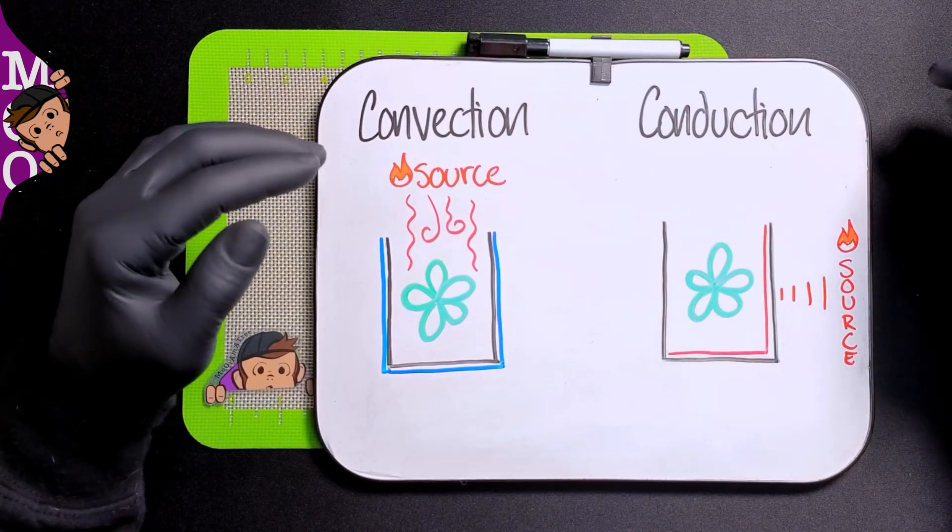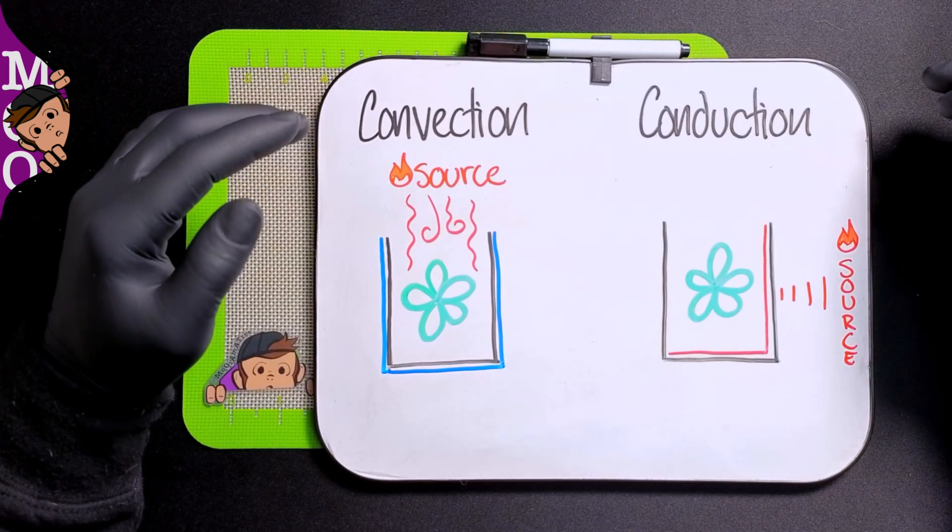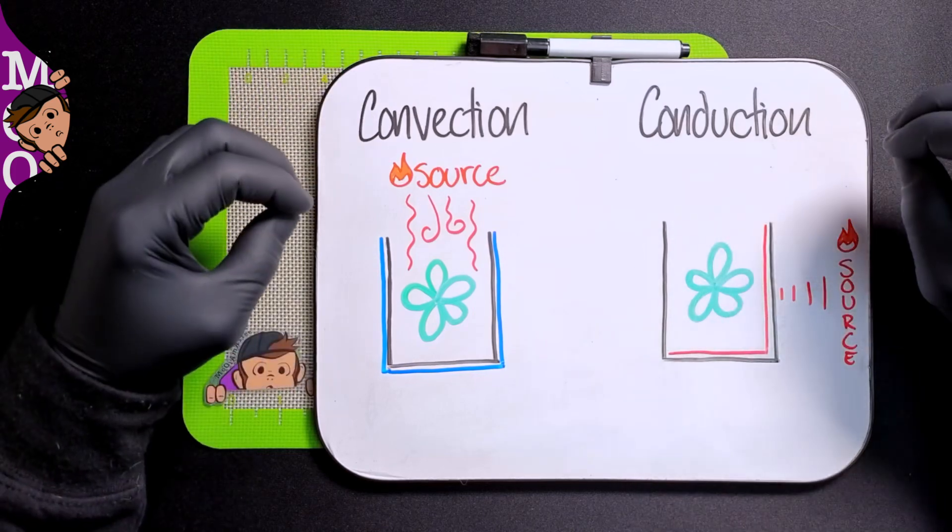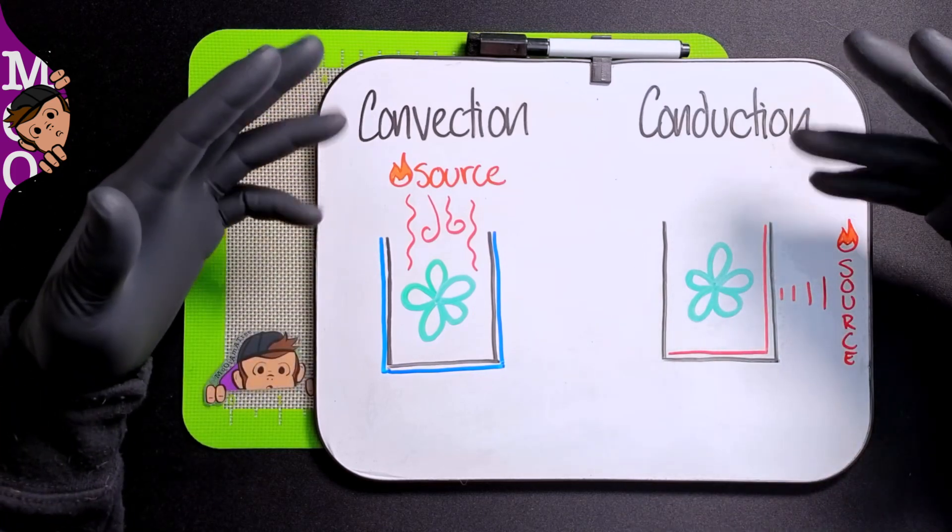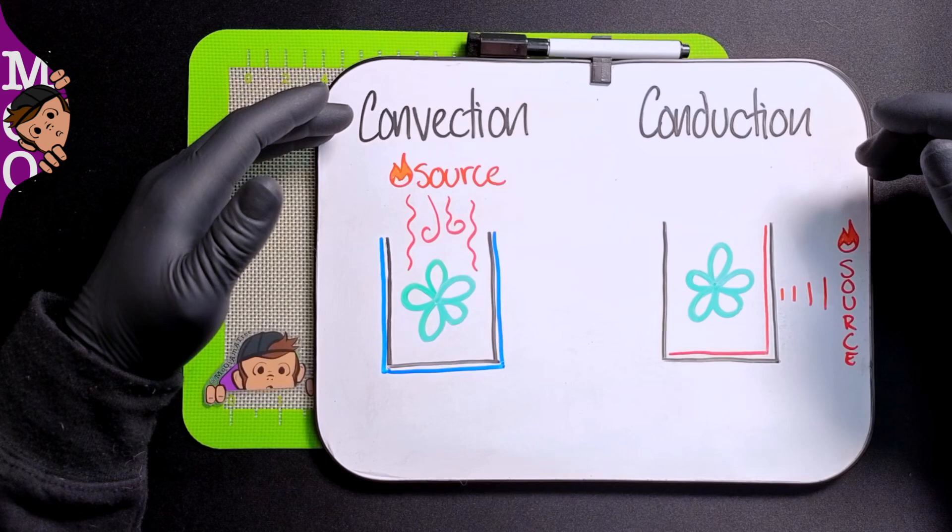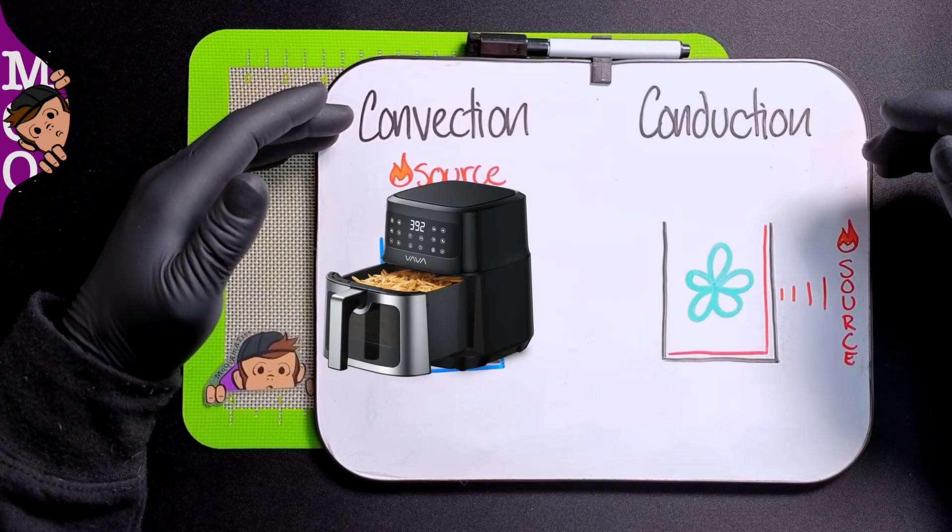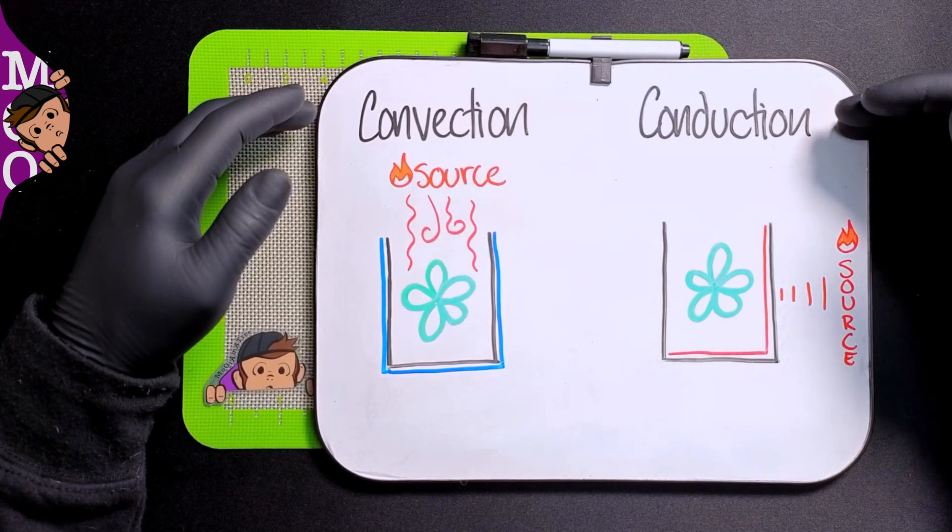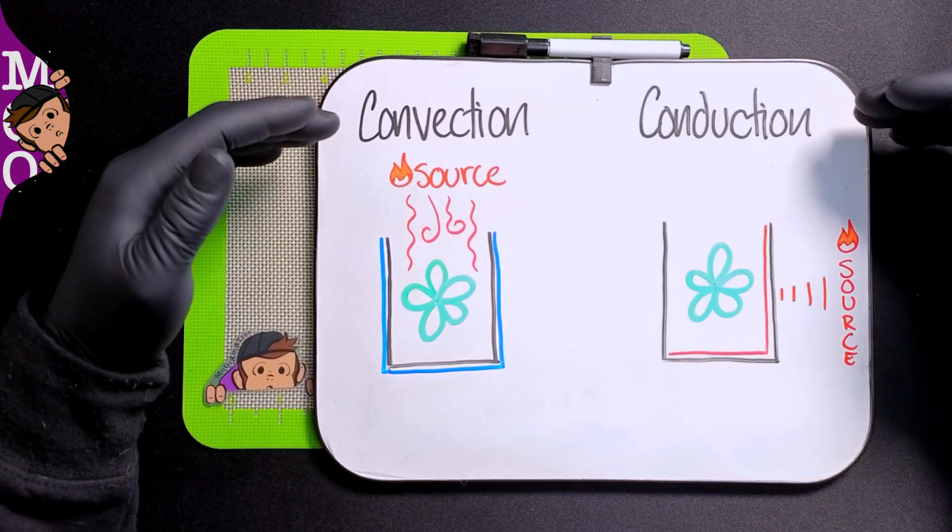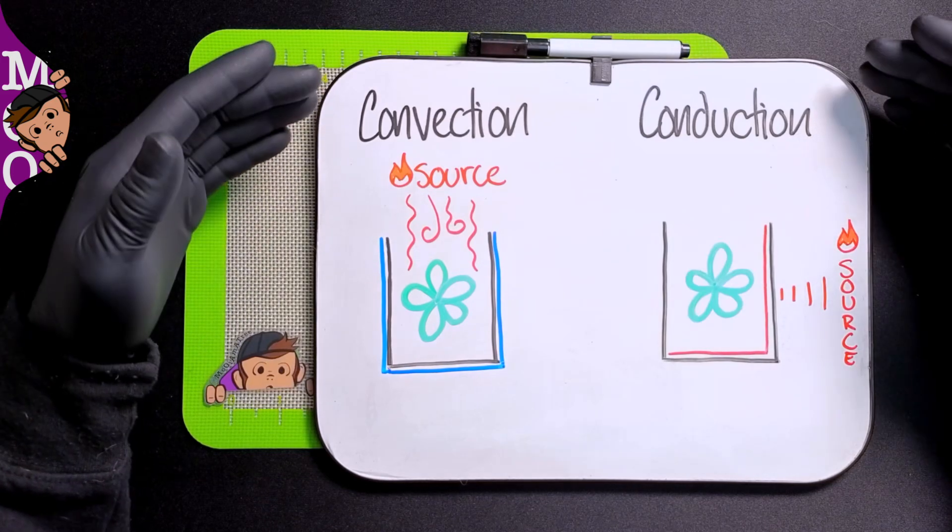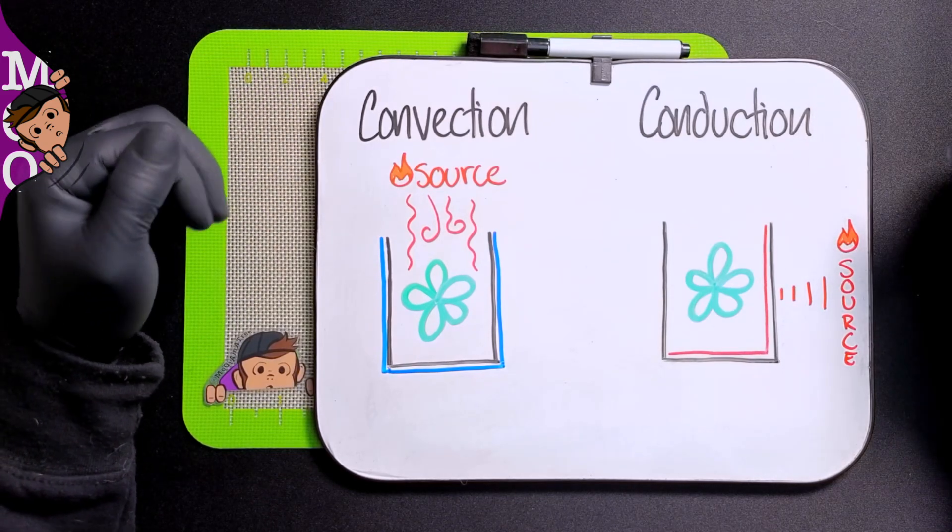So let's jump right into it: convection versus conduction. The easiest way to understand these two in our everyday life is convection is essentially an air fryer, conduction is essentially the pan on your stove. Let's talk about how each one works, and then we'll talk about why you would choose one over the other.